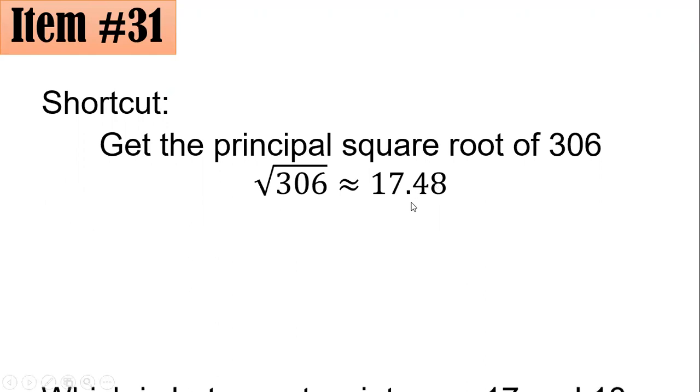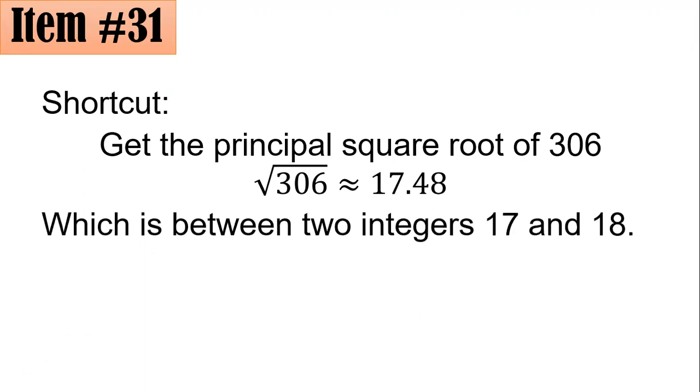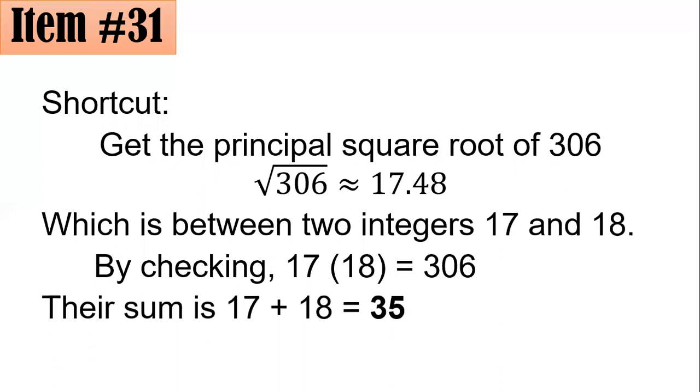It's between 17 and 18, right? So therefore the two numbers are 17 and 18. If you multiply that, I'm sure you will get 306. By checking, 17 times 18 is 306 indeed, and therefore their sum is 17 plus 18, which is 35. If you answered letter B, great job, but if not, what's important is that we are learning in the process.